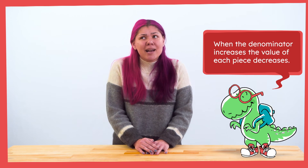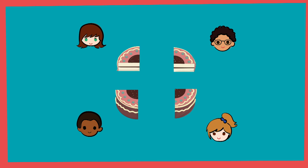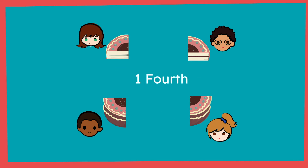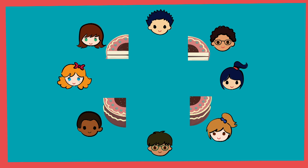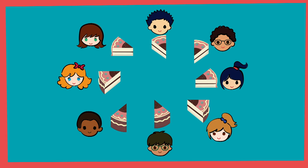Let's look at one more example. I know this can be tricky. What if four people shared one cake? Each person would get one-fourth because there are four equal parts called fourths. Now what happens if we share with eight people instead of four? The amount of people we share with increased from four to eight, so to make sure everyone got an equal share, the size of the individual pieces got smaller.